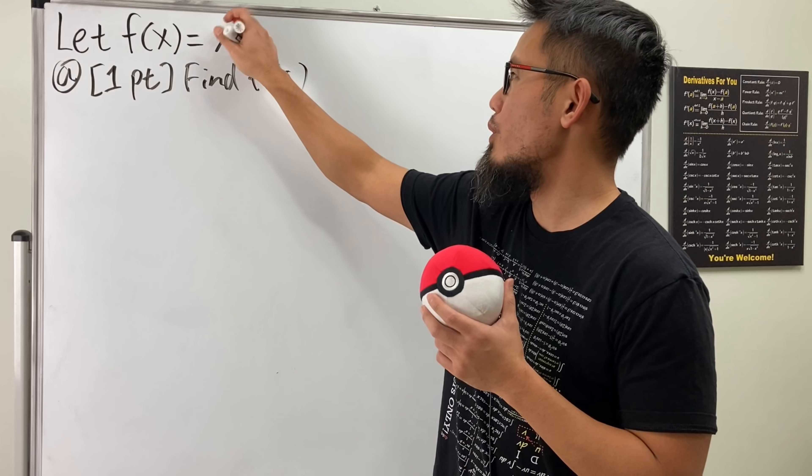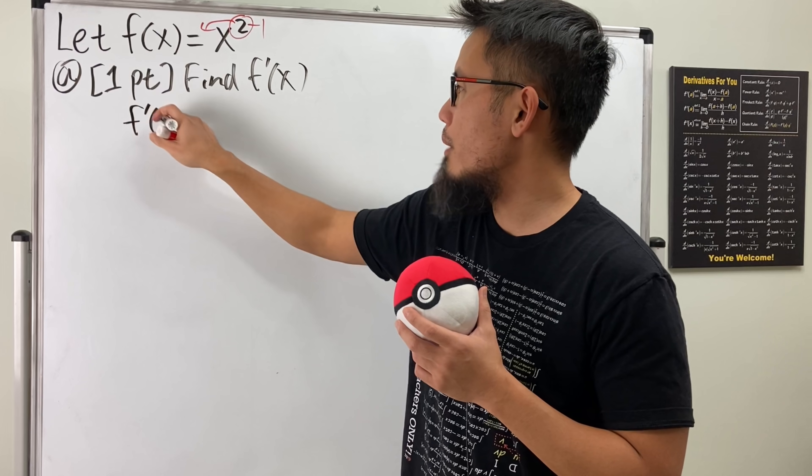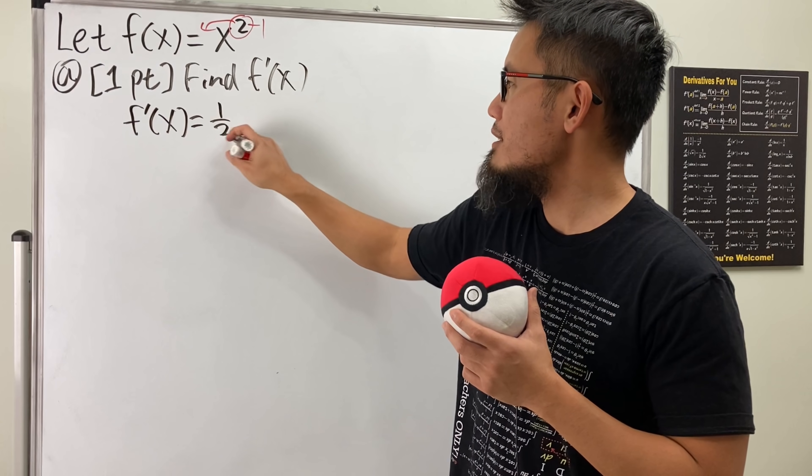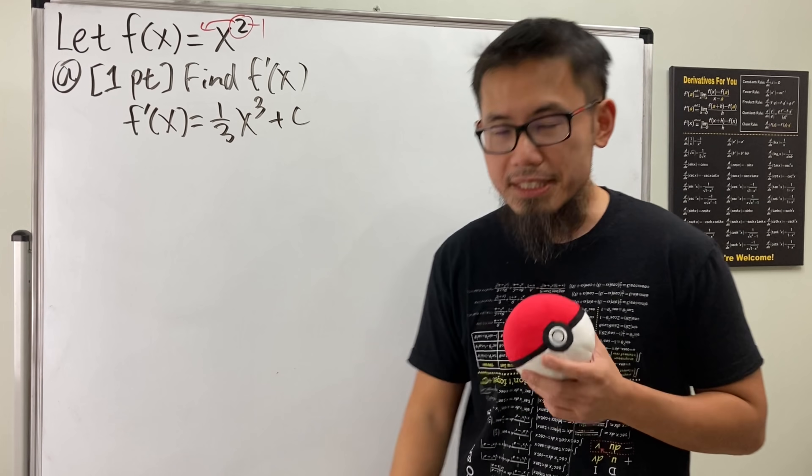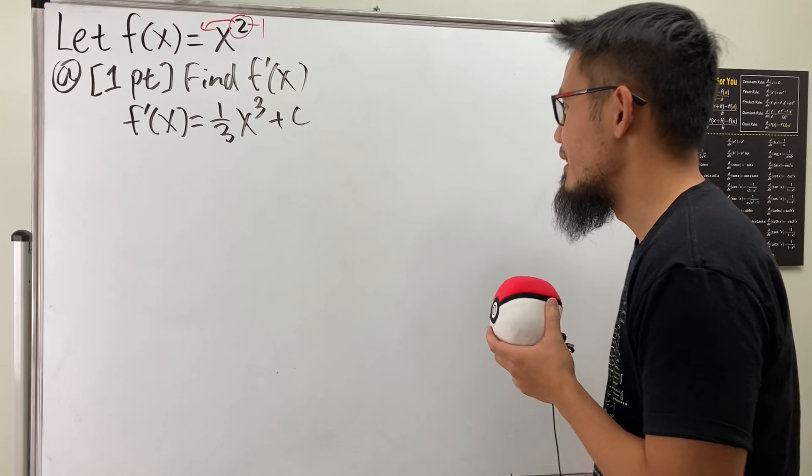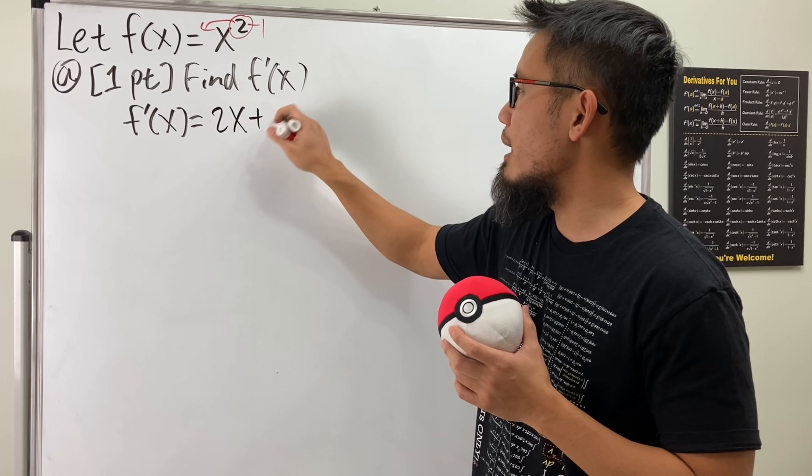And of course, we can just use the power rule. Bring the power to the front, and then minus 1, and we see that f'(x), this is just going to be... Just kidding. Put the 2 in the front, and minus 1 for the power, so we get 2x. Just 2x.